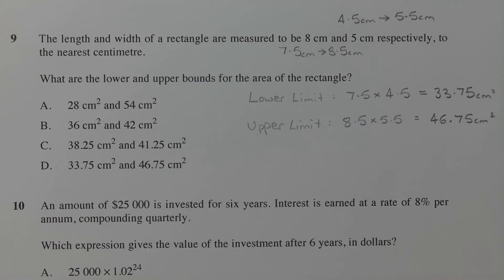But just for completeness, let's work out the upper limit or the upper bound for the area of this rectangle. So we take the upper limit for the length, which is 8.5 cm, multiplied by the upper limit for the width, which is 5.5 cm. 8.5 times 5.5 gives us 46.75 cm².